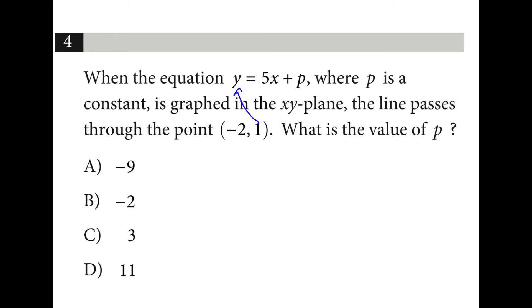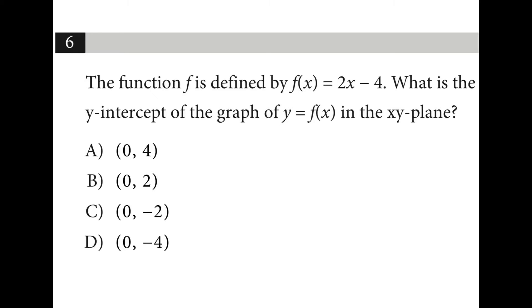We can plug in 1 for y and negative 2 for x and solve for p. So 1 is equal to 5 times negative 2 plus p. 1 is equal to negative 10 plus p. 11 is equal to p. To find the y-intercept, we can plug in a 0 here for x and that gives us negative 4.